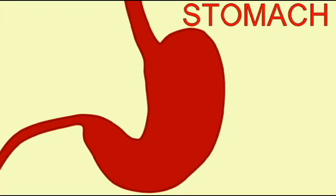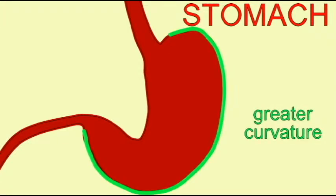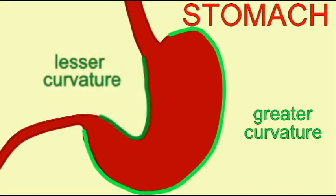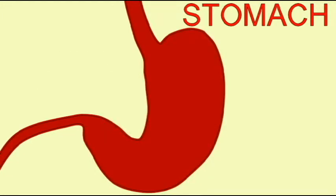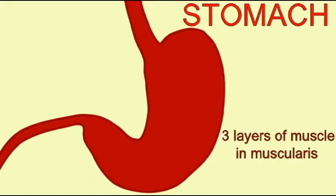The stomach is a large complex organ which is J-shaped, consisting of a greater curvature and a lesser curvature. There are three layers of smooth muscle in the muscularis layer instead of two.